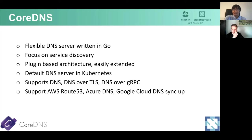CoreDNS has many features. CoreDNS supports DNS, DNS over TLS, and DNS over gRPC. CoreDNS also has a wide range of support for cloud DNS data sync. For example, we have AWS Route 53, Azure DNS, and Google Cloud DNS sync.